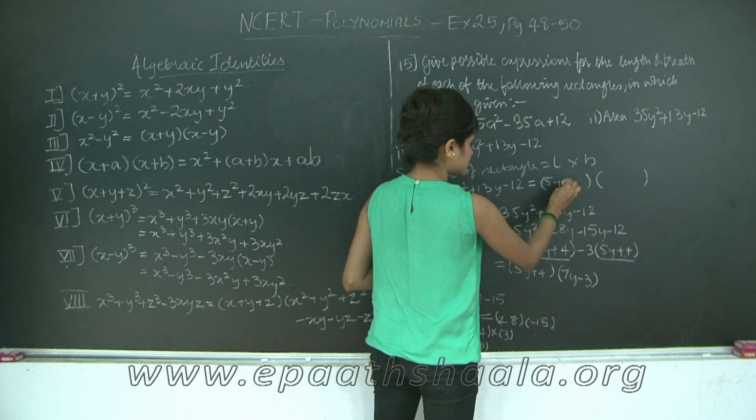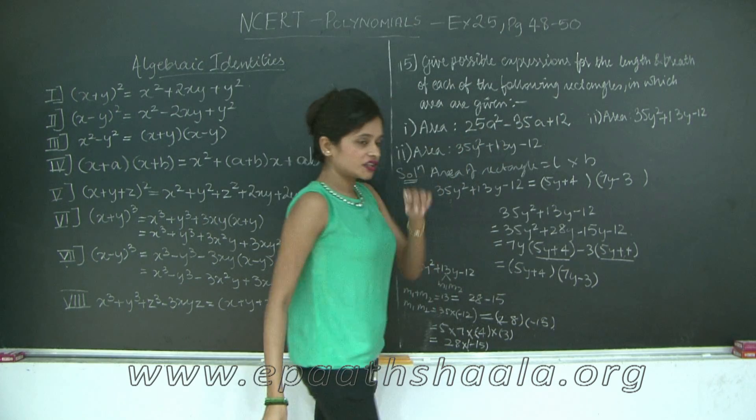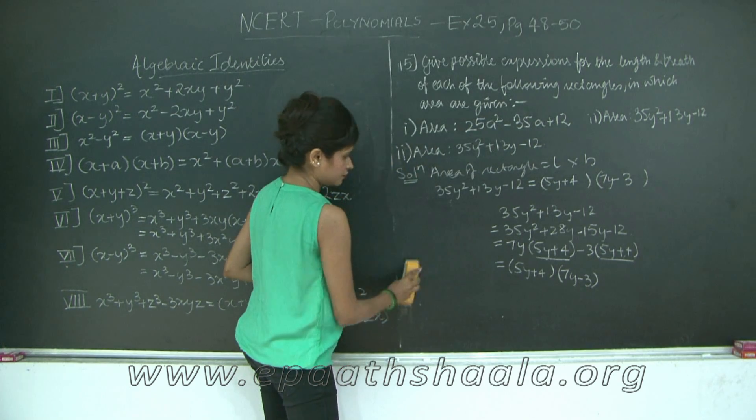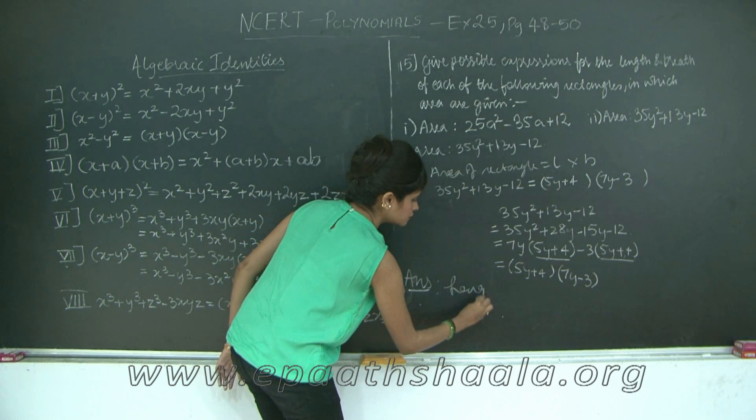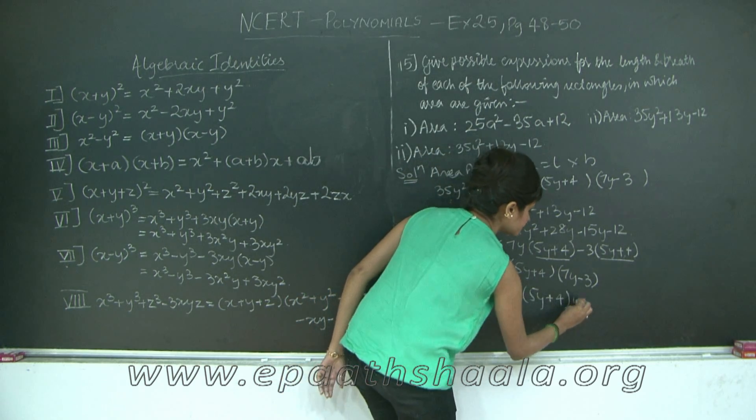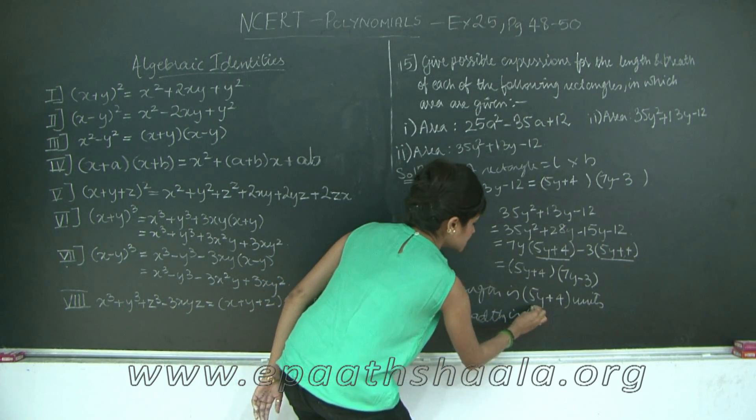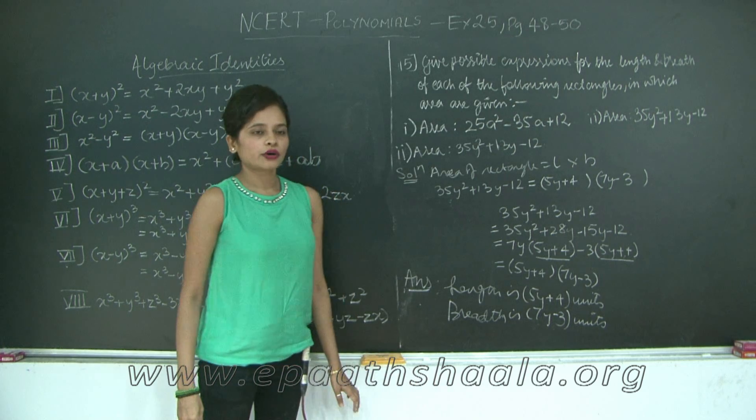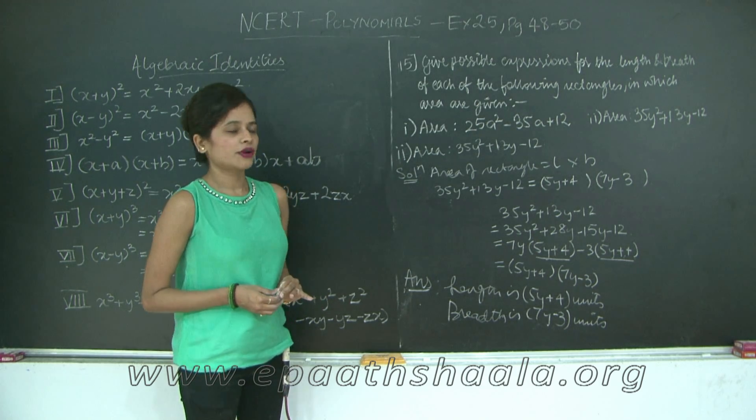So I will say it is 5y plus 4 and breadth is 7y minus 3. Therefore, let me erase this section for you. The answer: length is 5y plus 4 units and breadth is 7y minus 3 units. So you saw how we factorized polynomials to find the dimensions of your rectangle which is nothing but length into breadth.